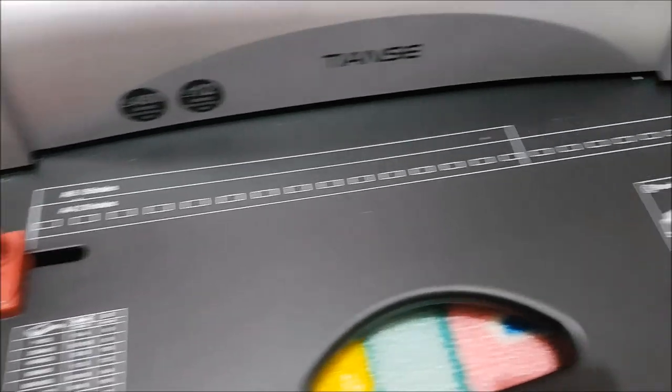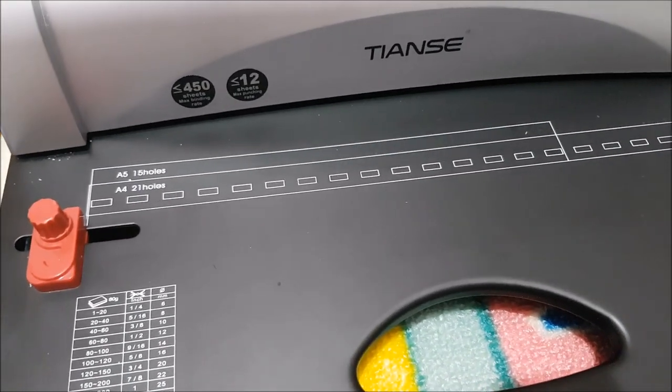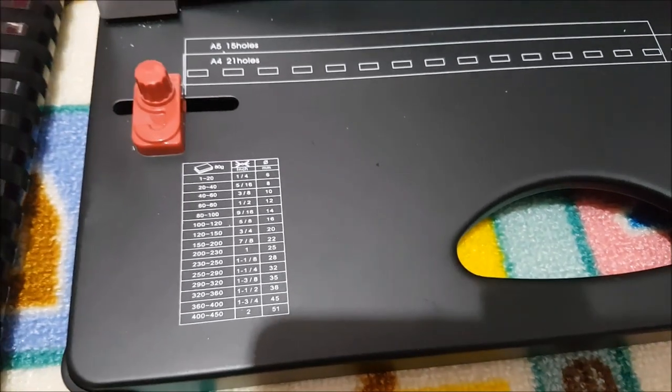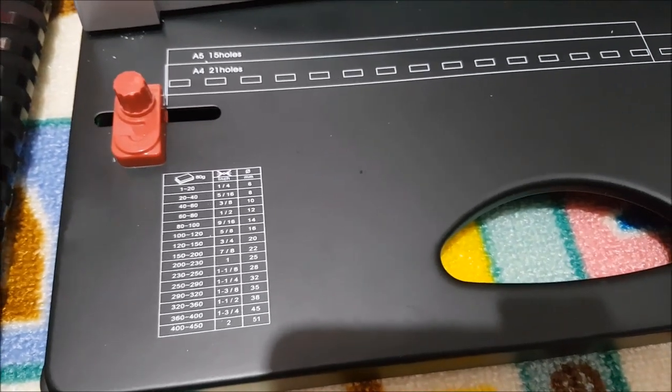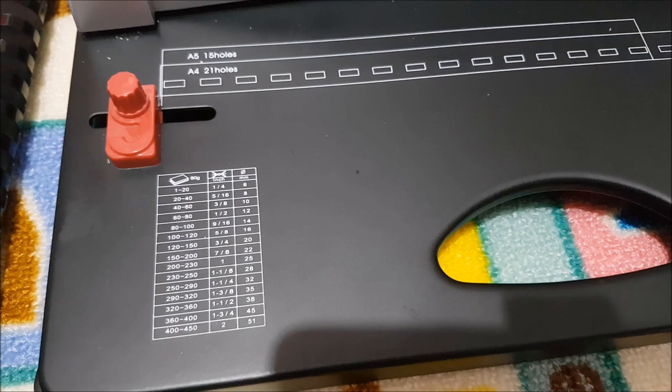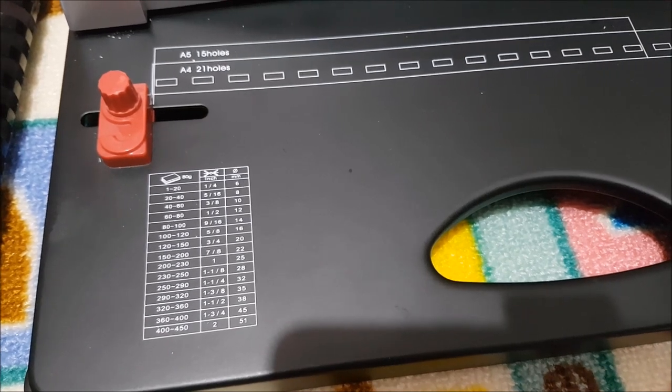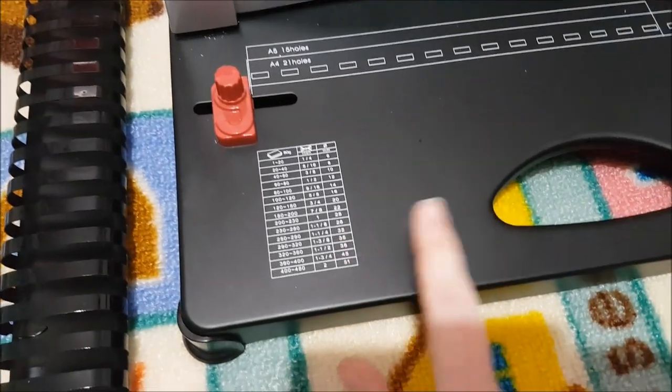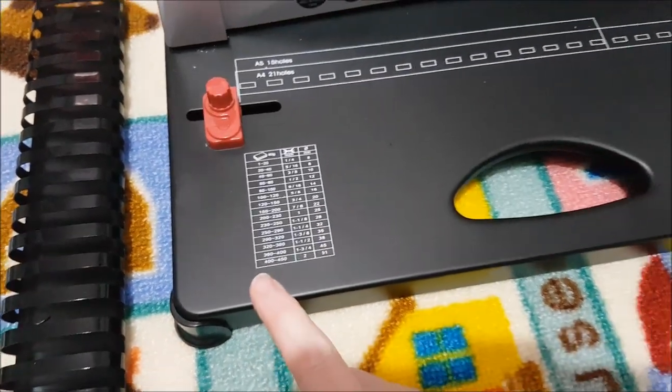It has a measuring scale here, so we have A5 which is 15 holes and A4 which is 21 holes. It has the different page numbers and what size binding coil you should purchase depending on the pages that you're using, which is very handy.